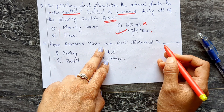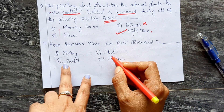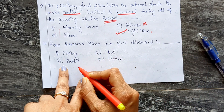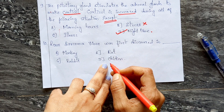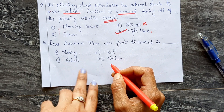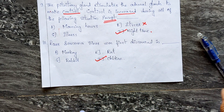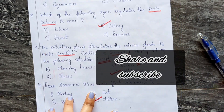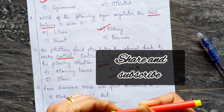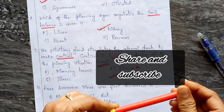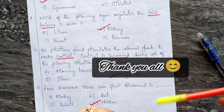The tenth question: Rous Sarcoma Virus was first discovered in — A) monkey, B) rat, C) rabbit, D) chicken. The correct answer is D — chicken. I hope these questions are helpful. If you liked this video, please share and subscribe. Thank you everyone.